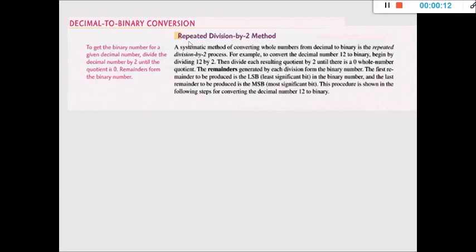By using the repeated division by two method, we can easily convert any decimal number to binary. The method says to get the binary number for a given decimal number, divide the decimal number by 2 until the quotient is 0. The remainders form the binary number.